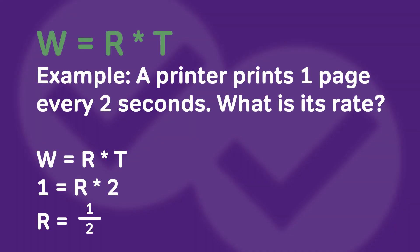With this equation, if we have any two of the variables, we can solve for the third. If we have rate and time, we can solve for work. If we have work and rate, we can solve for time. And if we have work and time, we can solve for rate. As an example, if we have a printer that prints one page every two seconds and we want to find its rate, the work is one page, the time is two seconds. Rearranging that, we get that rate is one over two, or one page per two seconds.